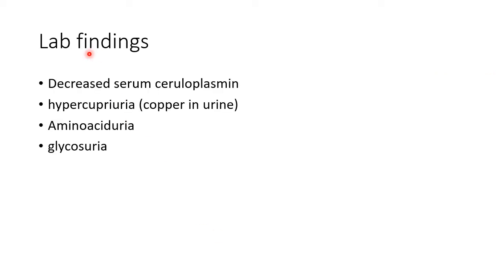Now let us see about the laboratory findings of Wilson's disease: decreased serum ceruloplasmin, hypercupriuria which is copper in urine, aminoaciduria, and glycosuria are the various laboratory findings in Wilson's disease.